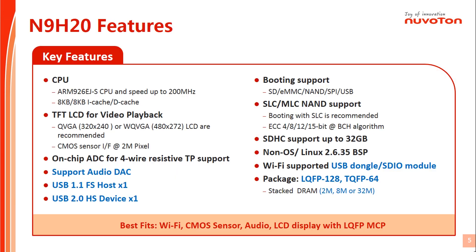This table shows N9H20 series key features information. The CPU can run up to 200 MHz. Display is suggested to use small size LCD like 3.5" QVGA or 4.3" WQVGA for good performance consideration. N9H20 series have a built-in 4-wire touch panel controller. The touch panel interface can connect with N9H20 directly without external part cost.